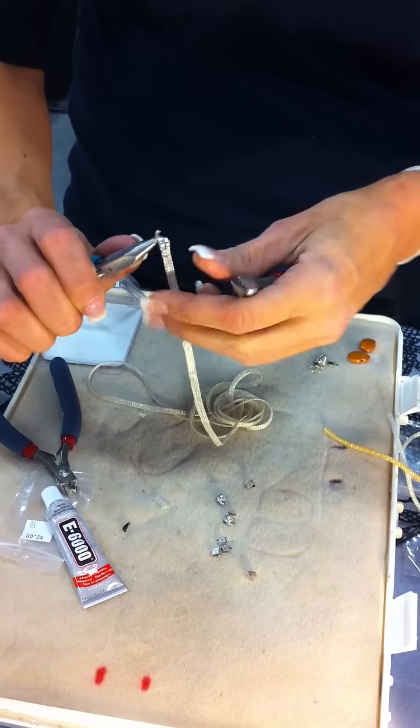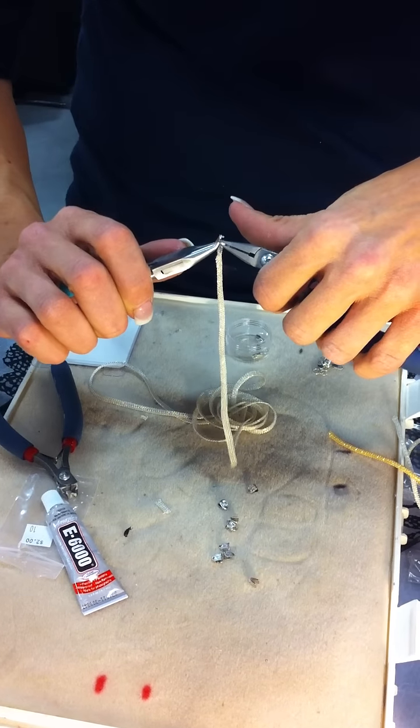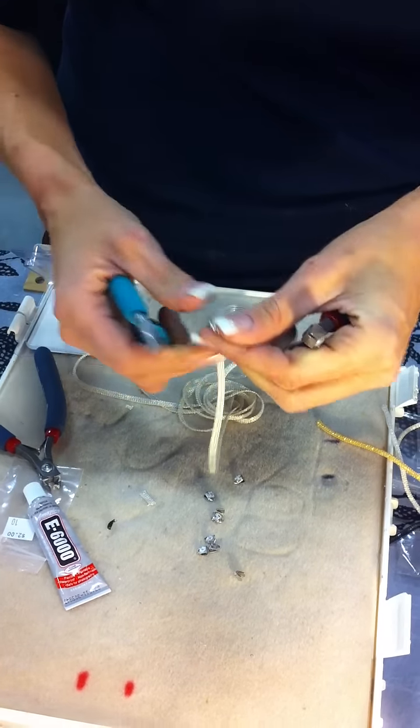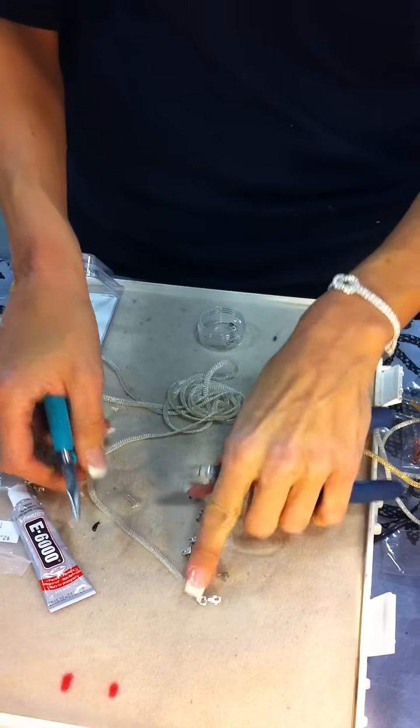Alright, so anyway, take my clasp, open jump ring, close it up, and that's how you finish it. Then just let your glue dry.